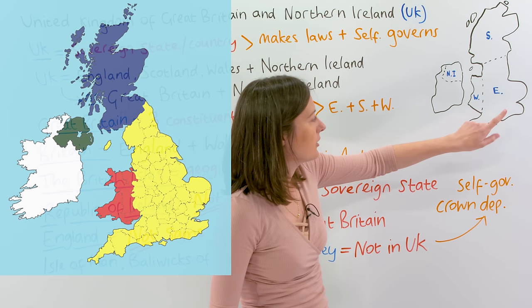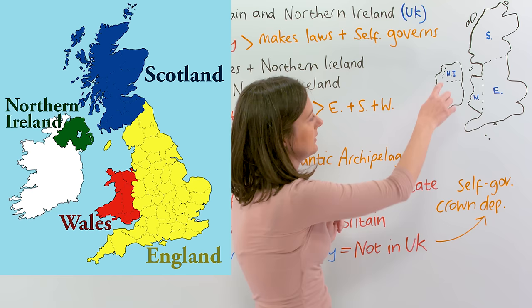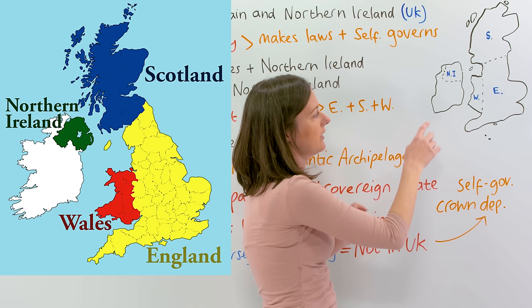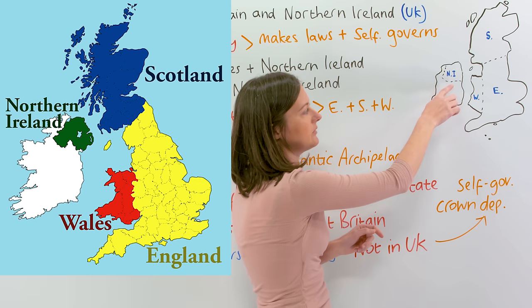We've got England, Scotland, Wales, and Northern Ireland. The dotted line shows where Northern Ireland ends. This part is part of the United Kingdom; this part is not. More on that later.